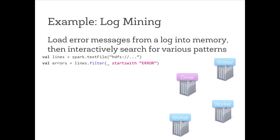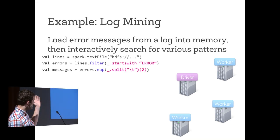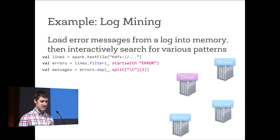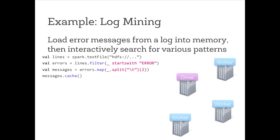Now I want to do some more complex munging. I'll start by splitting the data into fields based on tabs, and take the third column — I'll call that 'messages'. Because I know I'll want to do a bunch of queries over this dataset, instead of repeating the computation of loading from HDFS, filtering, and splitting, I want to save that in memory. So I call .cache on the messages RDD. This is lazy — it's telling Spark that when it actually computes the values of this RDD, keep those partitions around in memory.